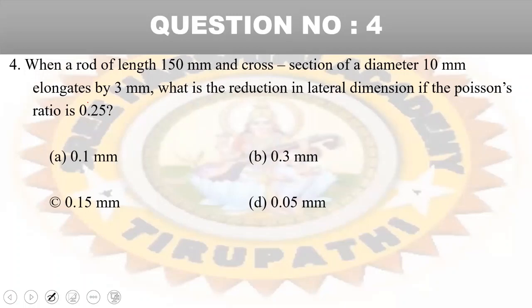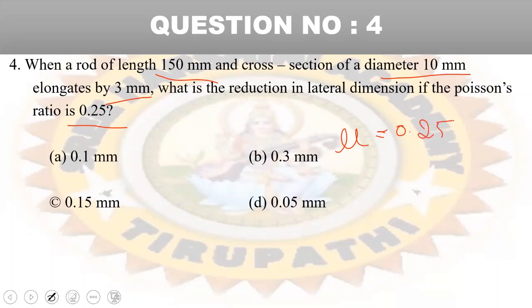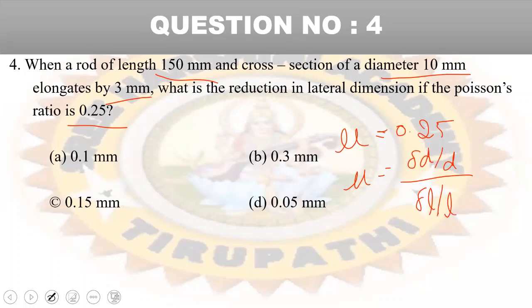Fourth question: a rod of length 150 mm with cross section diameter 10 mm elongates by 3 mm. Poisson's ratio is 0.25. Poisson's ratio mu equals lateral strain divided by linear strain, which is change in diameter by original diameter divided by change in length by original length.